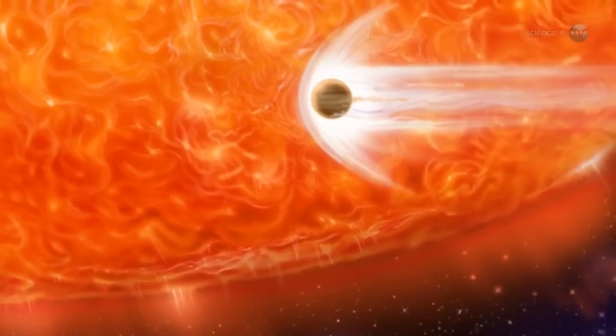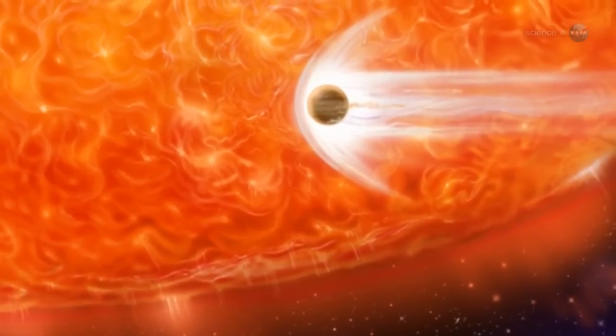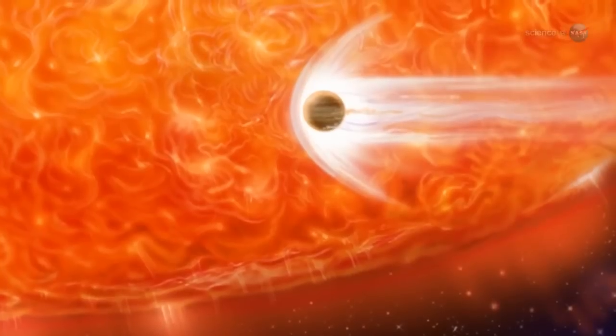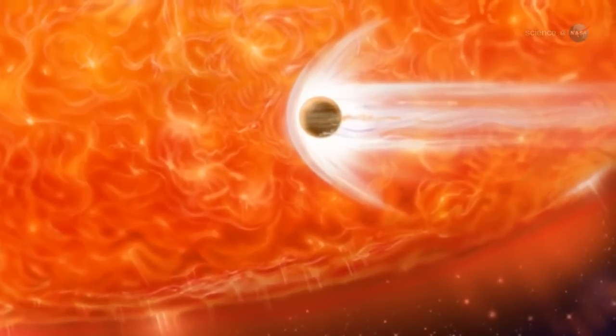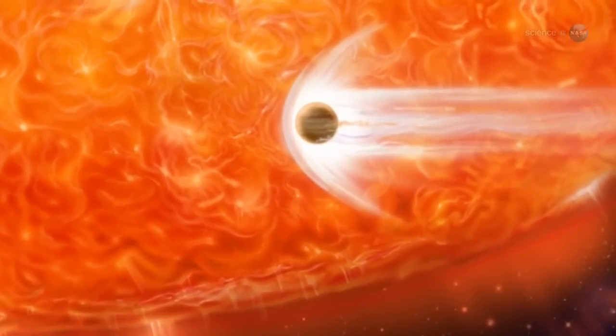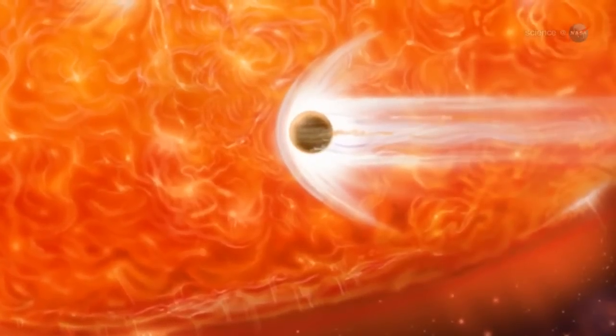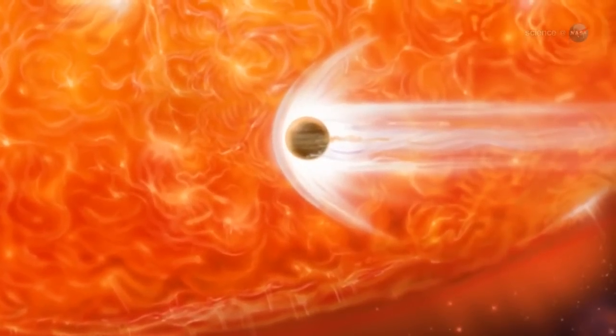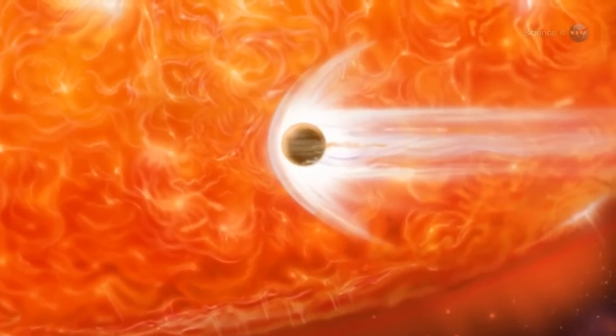The most likely source is a planet, Volchan explains. It is probable that the lithium production in BD plus 48740 was triggered by a mass the size of a planet that spiraled into the star and heated up while the star was digesting it.